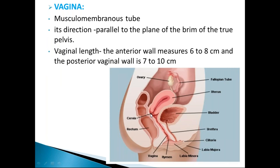The vagina is a musculomembranous tube whose axis parallels the pelvic axis. The anterior vaginal wall is shorter than the posterior vaginal wall: anterior is six to eight centimeters and posterior is seven to ten centimeters, making the posterior fornix the deepest fornix.